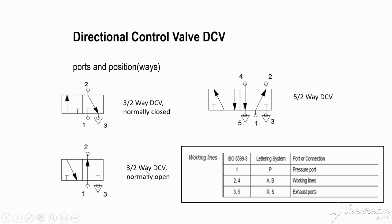A normally open type valve also exists. In this valve, air always flows from port 1 to port 2 and port 3 is closed. When you press it, port 1 is closed and ports 2 to 3 become active. In some applications — like the municipality water valve analogy — a normally open valve is required, which is why you must understand this concept.